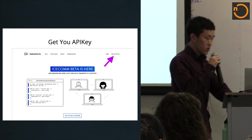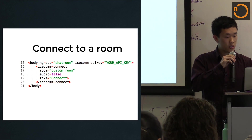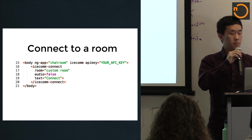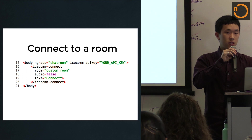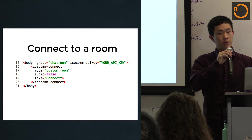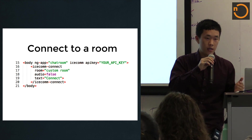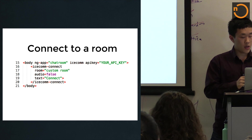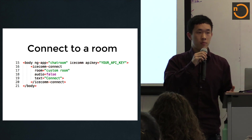After you secure your API key, you're going to put it inside the templates. There's an Icecom directive inside the body tag and you just need to insert your API key inside the API key attribute at the top. That will give you full support of Icecom's platform.